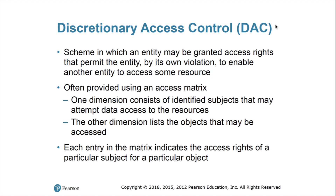It's a very fundamental type. It's a scheme in which an entity may be granted access rights that permit the entity to enable another entity to access some resources, often provided using the access matrix. The access matrix has two dimensions: one dimension contains the subjects — the users or claimants of that information — and the other contains the access rights on those objects. Each entry in the matrix indicates the access rights of a particular subject for a particular object.